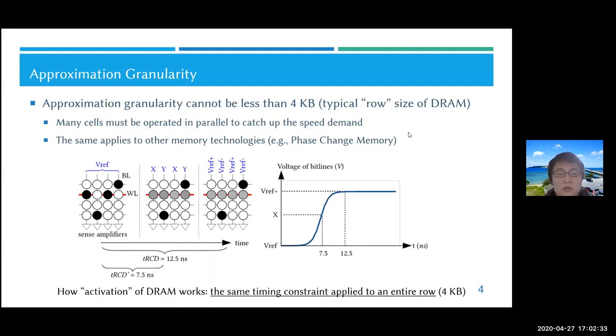If you could control the timing constraint cell by cell, like bit by bit, you could control the error rate per bit, but unfortunately this is not the case.